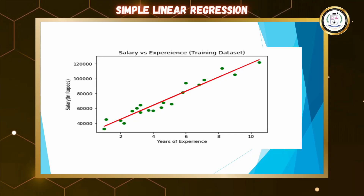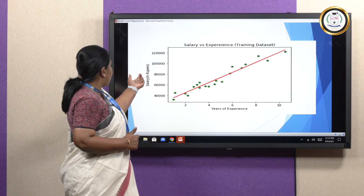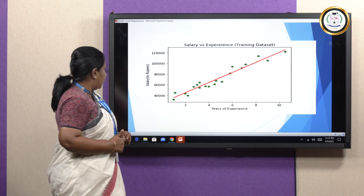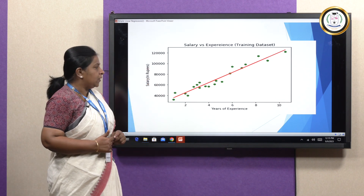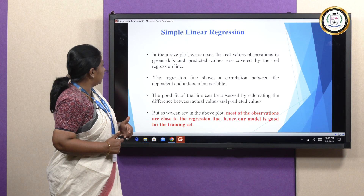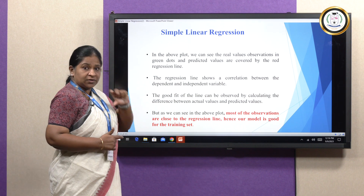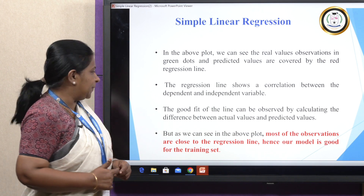If you look into this graph, you can see that on the x-axis we have years of experience and on the y-axis we have salary in rupees. Years of experience is the independent variable and salary is the dependent variable — meaning, based on years of experience, we are going to predict the salary. The actual observations are plotted as green dots and the predicted values are covered by the red regression line.